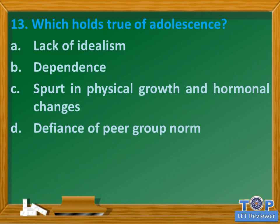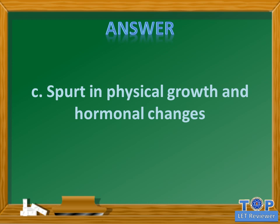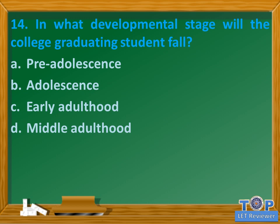Question number thirteen: which holds true of adolescence? A) lack of idealism, B) dependence, C) spurt in physical growth and hormonal changes, D) defiance of peer group norms. Answer: C) spurt in physical growth and hormonal changes. Question number fourteen: in what developmental stage will a college graduating student fall? A) pre-adolescence, B) adolescence, C) early adulthood, D) middle adulthood.